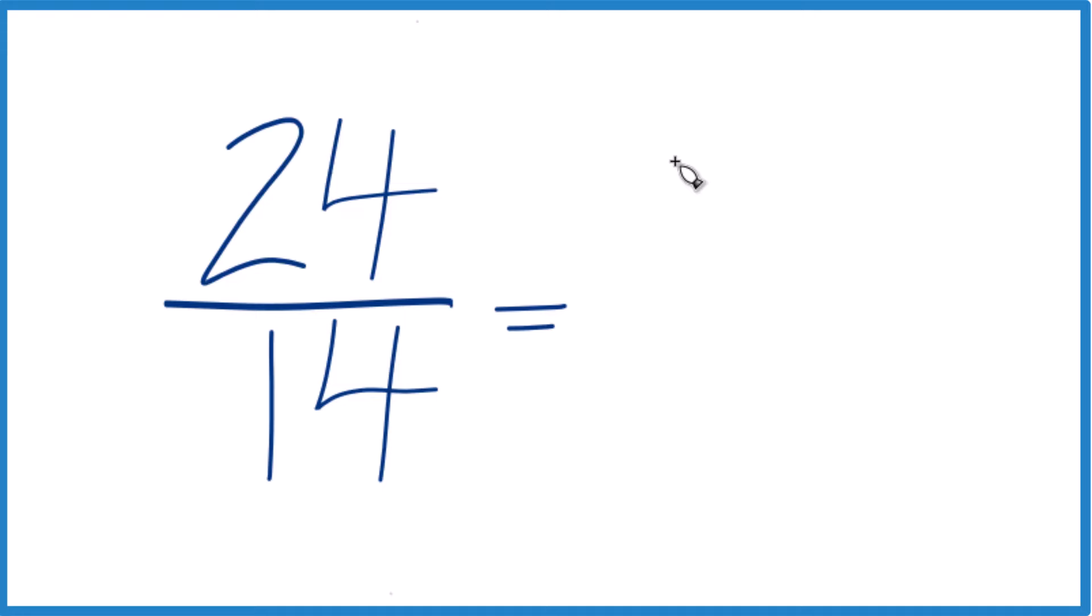Because 24 divided by 2, that's 12, and I know that 14 divided by 2 is 7, and 7 typically is hard to reduce down any further. So we end up with 12 sevenths.